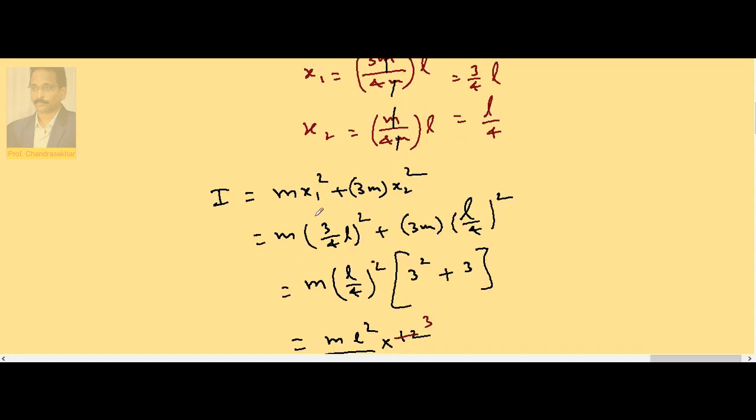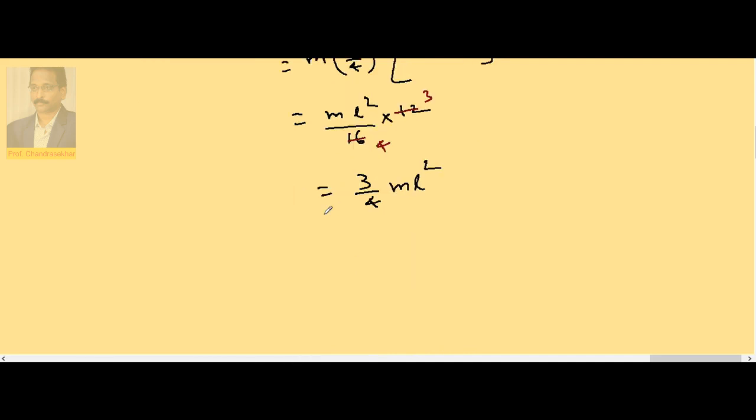Now substitute M value is 5 and L value is 1/2. So 3/4 into 5 into 1/2 whole square. So it is 15 divided by 16 kg meter square.